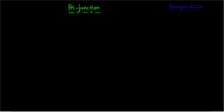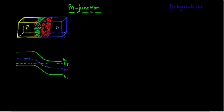In the previous video, we saw how a PN junction is formed, its energy band diagram, and how the current density J is zero under equilibrium conditions. In this video, we are going to see the charge distribution inside the diode, the electric field profile, and the potential inside the PN junction.